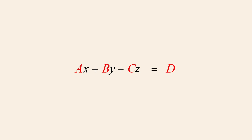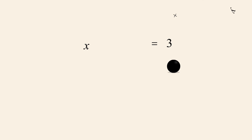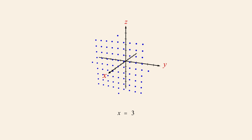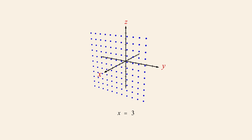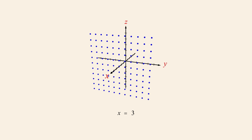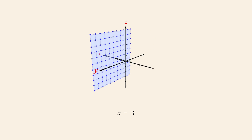Likewise, if we set a, b, c, and d to one, zero, zero, and three, all variables but x are eliminated, giving us a graph which consists of all points with an x-coordinate of three. The graph of this equation is a vertical plane three units in front of the origin.